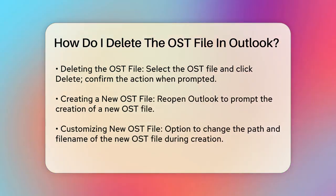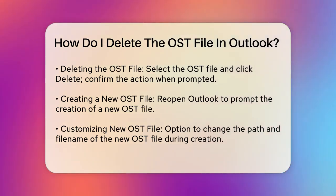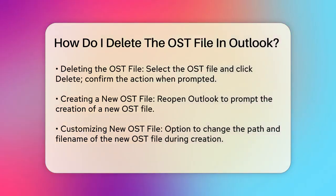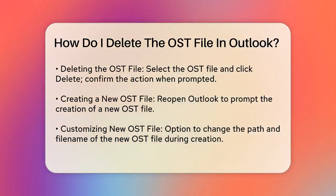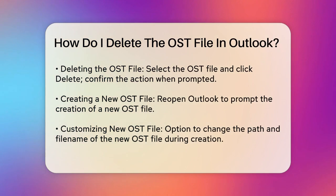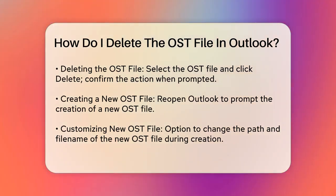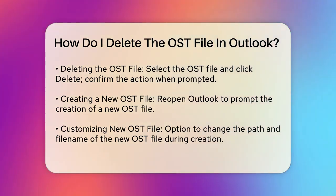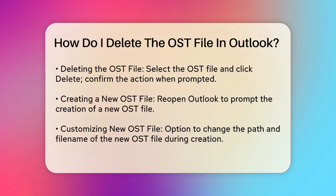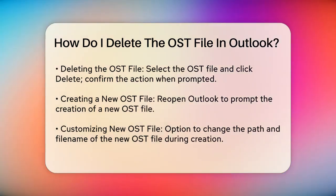Step 2: Locate the OST file. You can find the OST file by using the Run window. Press Windows+R, type %LocalAppData%\Microsoft\Outlook, and click OK. This will take you to the folder where your OST file is stored.